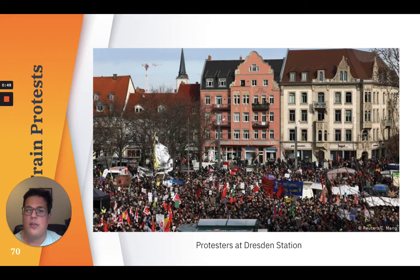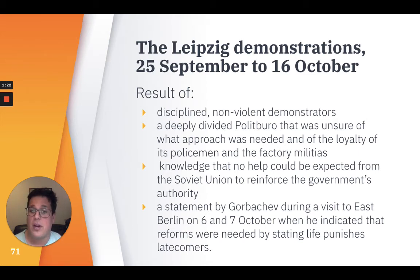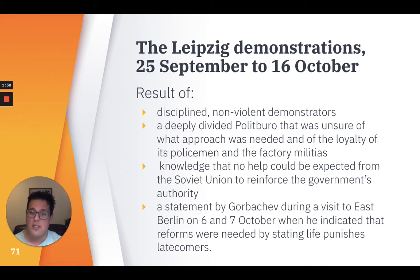Once the route the trains were taking to the West German frontier became known, large crowds demonstrated along the routes. At Dresden station on October 7th, a crowd of 10,000 attempted to storm the station and board the trains to the FRG. On four successive Mondays between September 25th and October 16th, large but peaceful demonstrations took place in Leipzig in the GDR. The regime did not respond with violence, due to disciplined nonviolent demonstrators, a deeply divided politburo, knowledge that no help could be expected from the Soviet Union, and a statement by Gorbachev during a visit to East Berlin on October 7th indicating that reforms were needed, stating 'life punishes latecomers.'